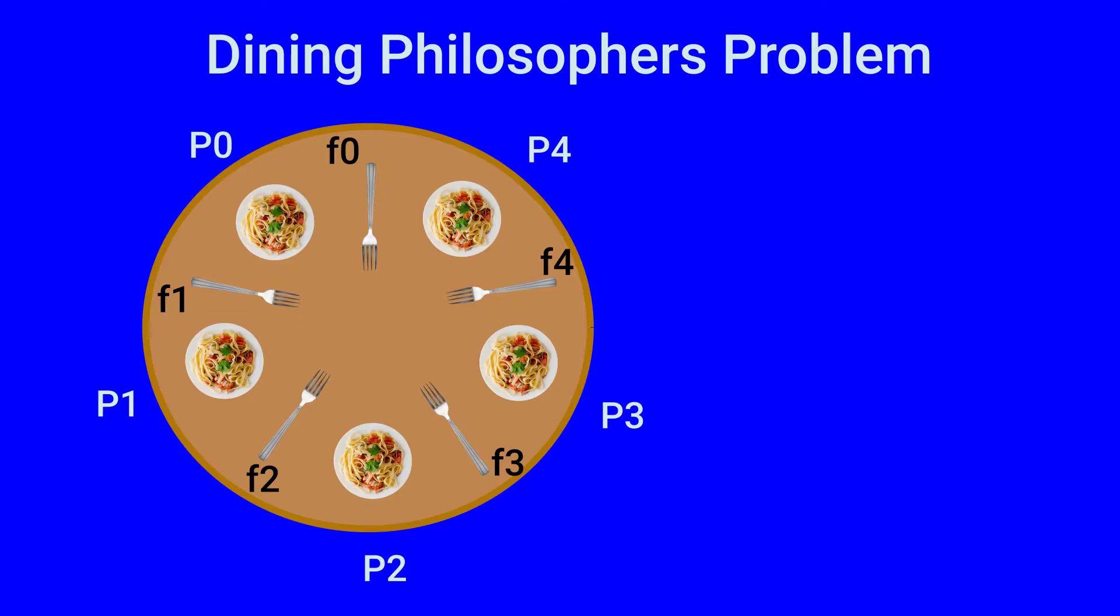For each philosopher there is a plate of hot steaming spaghetti, and we have five forks F0, F1, F2, F3, and F4. Forks are placed between the plates of philosophers such that there is one fork between any two philosophers. Fork F0 is to the left of philosopher P0, fork F1 is to the left of philosopher P1, and so on.